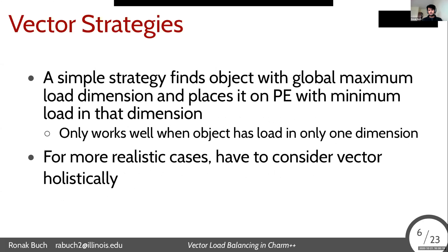One simple approach is a version of the greedy LB in CHARM, where we find the object with the global maximum load dimension — looking through all dimensions of every object to find which one has the biggest value — and then place it on the PE with the minimum load in that dimension. This works well, but really only works well when the object has load in just one dimension, since we only consider one at a time. For more realistic cases, we have to consider the whole vector holistically, looking at both the object and the processors and how they mesh together.